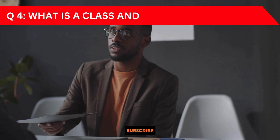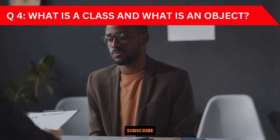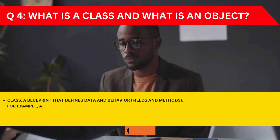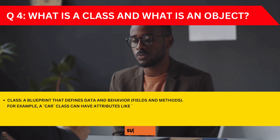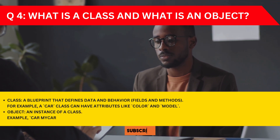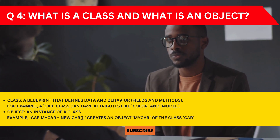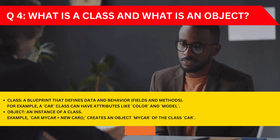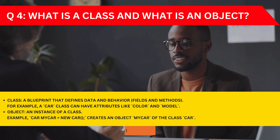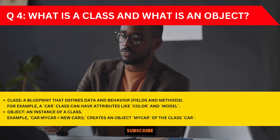Question 4: What is a class and what is an object? For class, it is a blueprint that defines data and behavior — that is, fields and methods. For example, a Car class can have attributes like color and model. An object is an instance of a class. You can refer to this example and come up with new examples for practice.